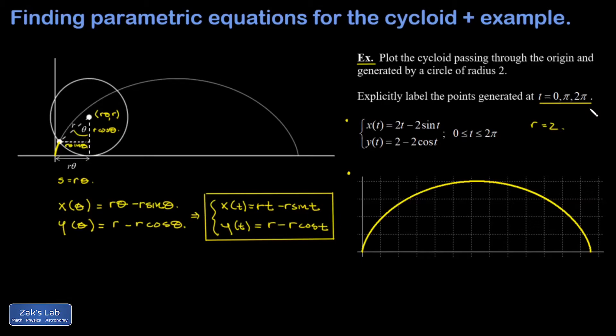If I substitute in t = 0, that gives me x(0) = 2 times 0 minus 2 times sine of 0, which is 0, and I get an x coordinate of 0. If I plug in y(0), I get 2 minus 2 cosine of 0. Cosine of 0 is 1, so I get 2 minus 2, which is 0. In other words, at t = 0, we're right here at the origin.